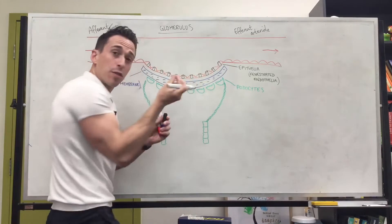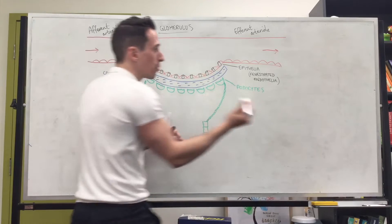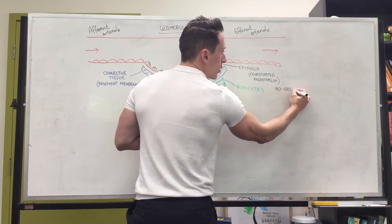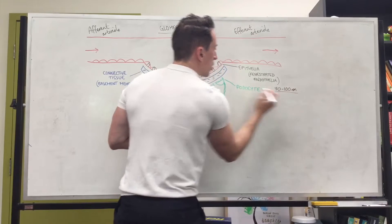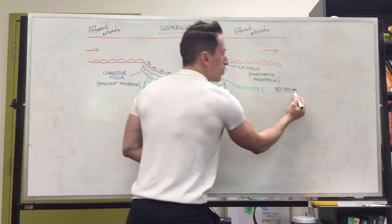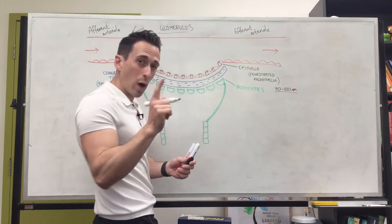Now the width of these fenestrated endothelia. So what size things can get through? It only lets through things that are between 70 to 100 nanometers. That's its diameter. So anything smaller than that, it lets through. Now let's put that into perspective. When you've got one meter, one meter, you divide that by a thousand and you've got a millimeter.